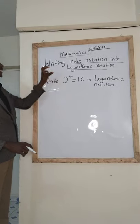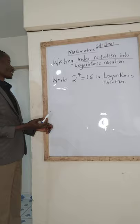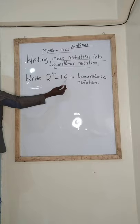So, writing index notation into logarithmic notation. What is the number that you are supposed to write? It is this one. Write 2 raised to the power 4 is equal to 16 in logarithmic notation.